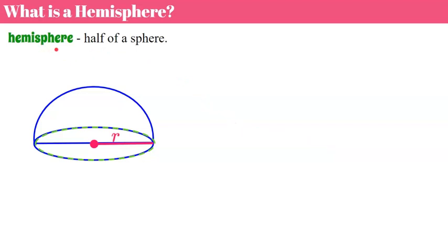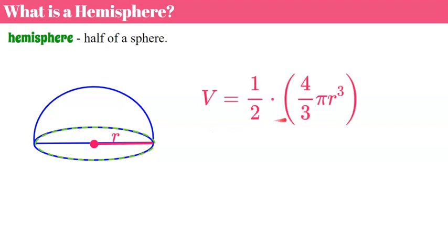First we want to talk about a hemisphere, which is half of the sphere. Think about the top of an ice cream cone — a barn silo is another example with a hemisphere on top. Sometimes when finding the volume of a composite figure, you might have a hemisphere to deal with. You take the volume of a sphere and multiply it by one-half or divide by two. There's no special formula; you just need to recognize that it's half of a sphere.